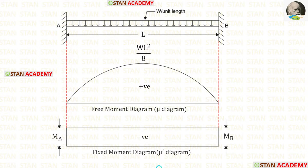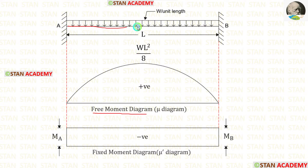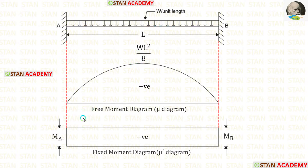To find out the fixed end moments we have to draw two diagrams. The first diagram is the free moment diagram or mu diagram. The second one is the fixed moment diagram or mu-dash diagram. To draw the free moment diagram we have to assume this fixed beam as a simply supported beam. In the simply supported beam, if the UDL is acting for the full span, the formula for the maximum bending moment in the center is WL² upon 8. The bending moment diagram will be in the shape of a parabola if there is UDL.